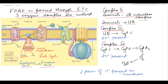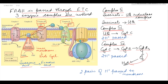Complex 3, same as in the case of NADH, catalyzes the transfer of electrons from ubiquinol to cytochrome C, passing two protons into the intermembrane space. Complex 4 catalyzes the transfer of electrons from cytochrome C to cytochrome aa3, and finally to oxygen to form water, pushing two protons into the intermembrane space. So when FADH2 is passed through the electron transport chain, two pairs of protons enter the intermembrane space.